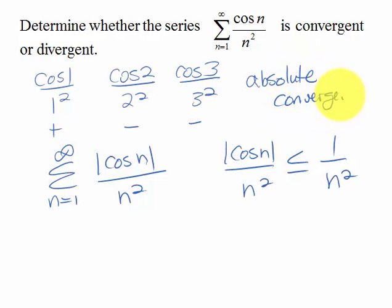Since the absolute value of the terms in the series converged, absolute convergence implies convergence. So this original series is also convergent.